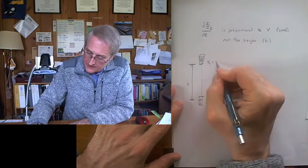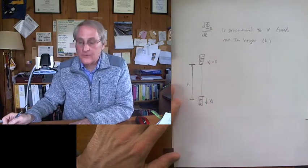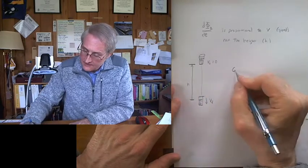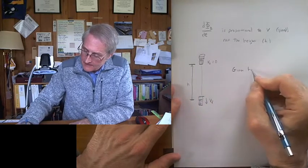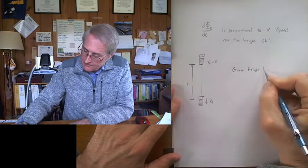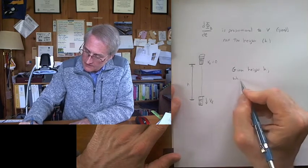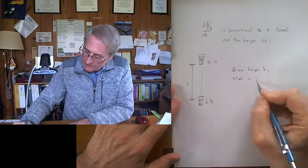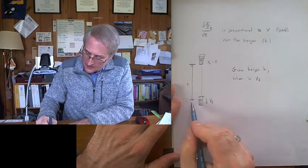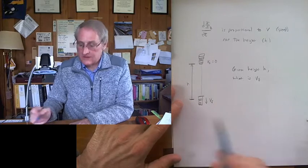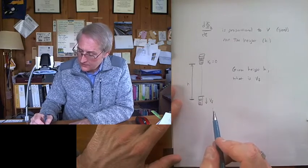Here, initial speed equals zero. So given the height of the drop, we need to know the final speed at the bottom of the drop, right here at the level of where the wire coils are.